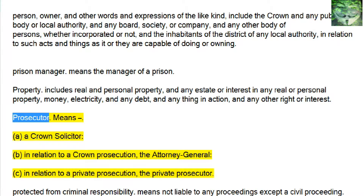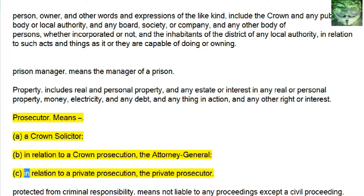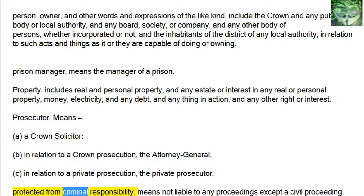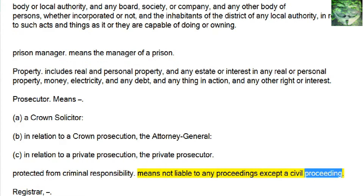Prosecutor — a, a Crown solicitor; b, in relation to a Crown prosecution, the Attorney General; c, in relation to a private prosecution, the private prosecutor. Protected from Criminal Responsibility means not liable to any proceedings except a civil proceeding.